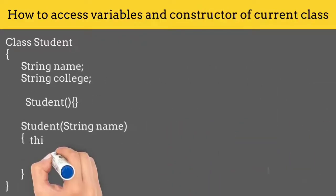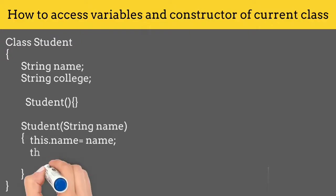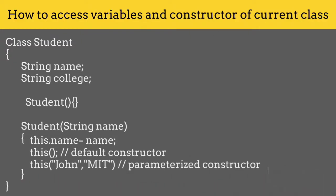If you want to access the variable of a current object, then you will use this.variable name. If you want to access the constructor inside another constructor, then you will use this function. For accessing parameterized constructors, you will simply pass the parameters to this function. That's it for today's video.